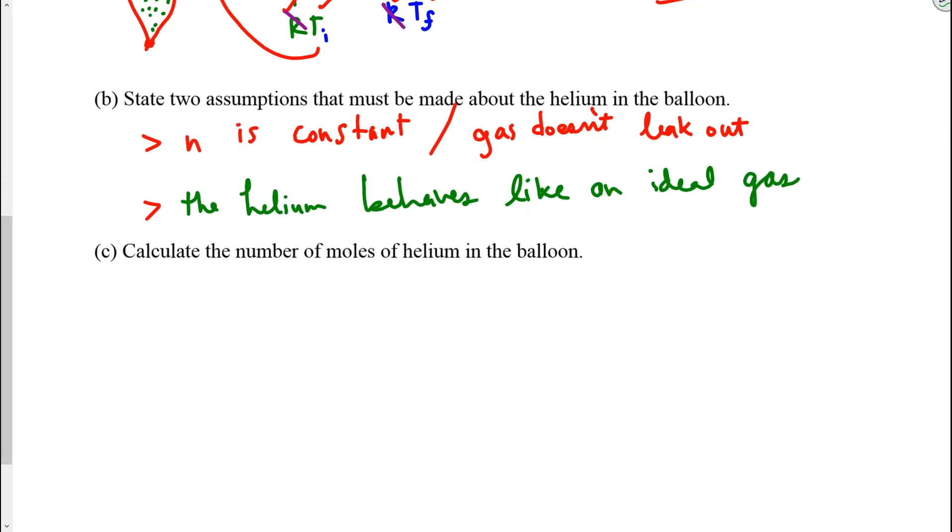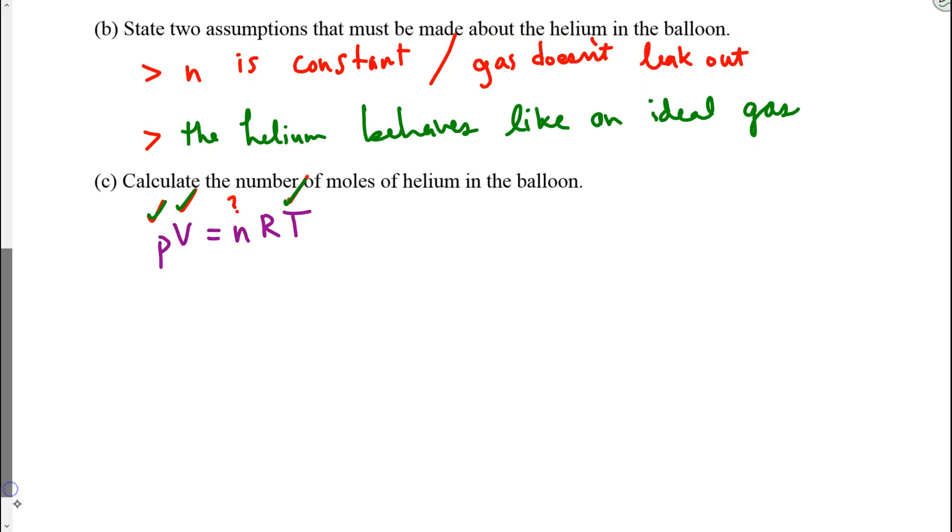Once we have the answer to part A, to find the number of moles, we simply plug in the initial pressure, initial volume, initial temperature. Or you could plug in the final pressure, final volume, final temperature. It's up to you.